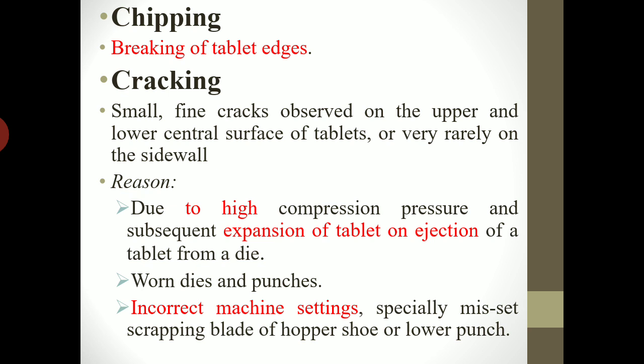We have seen cracking, chipping, capping, and lamination in detail. The reasons and remedies behind all four types are the same. The first reason is high compression pressure. Due to high compression pressure and subsequent expansion of the tablet on ejection, this defect can occur. When the tablet comes out of the die with too much pressure, there will be a sudden release of pressure, and the upper crown will get separated either completely or partially.